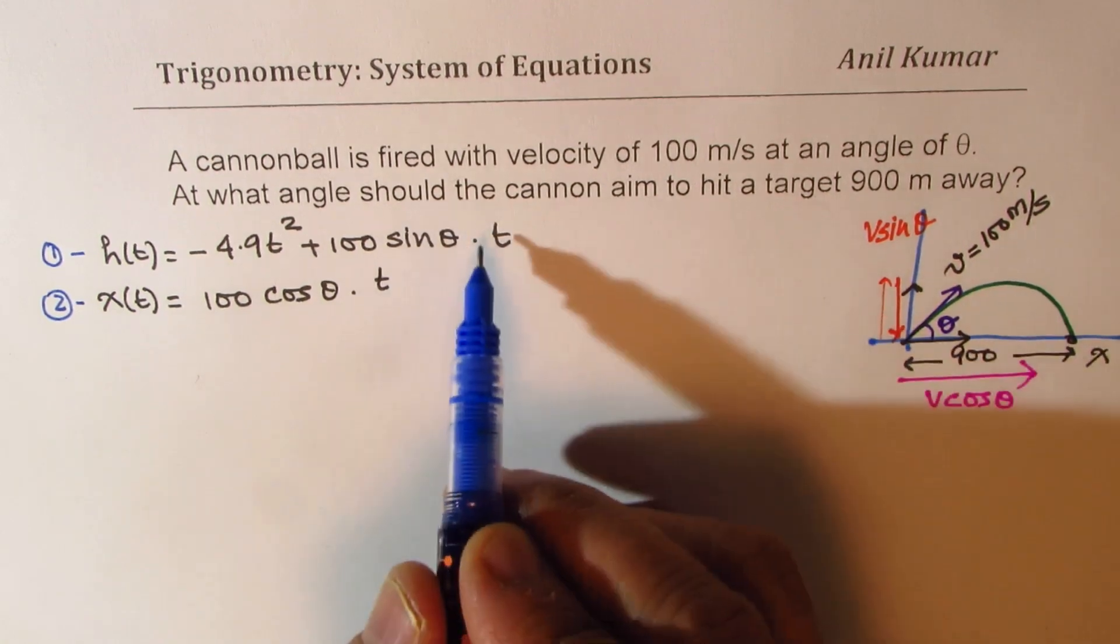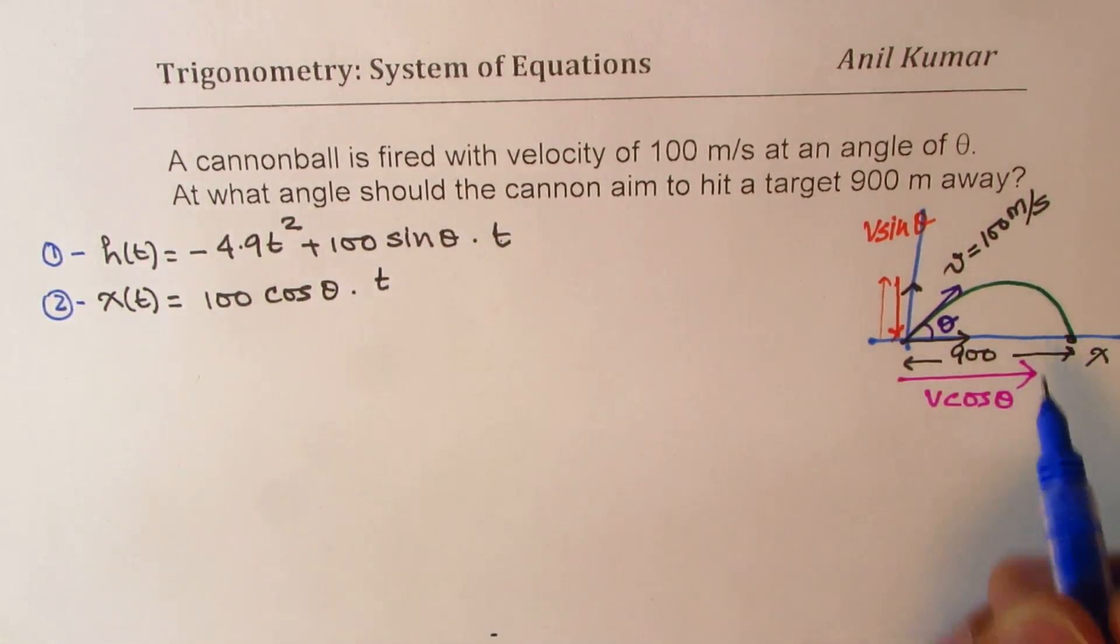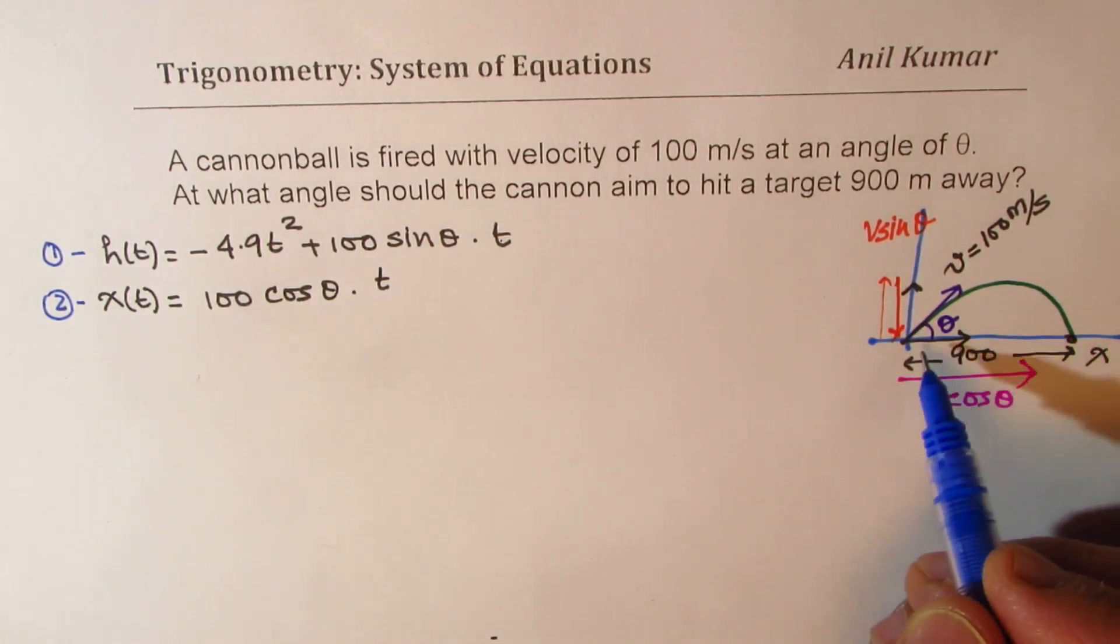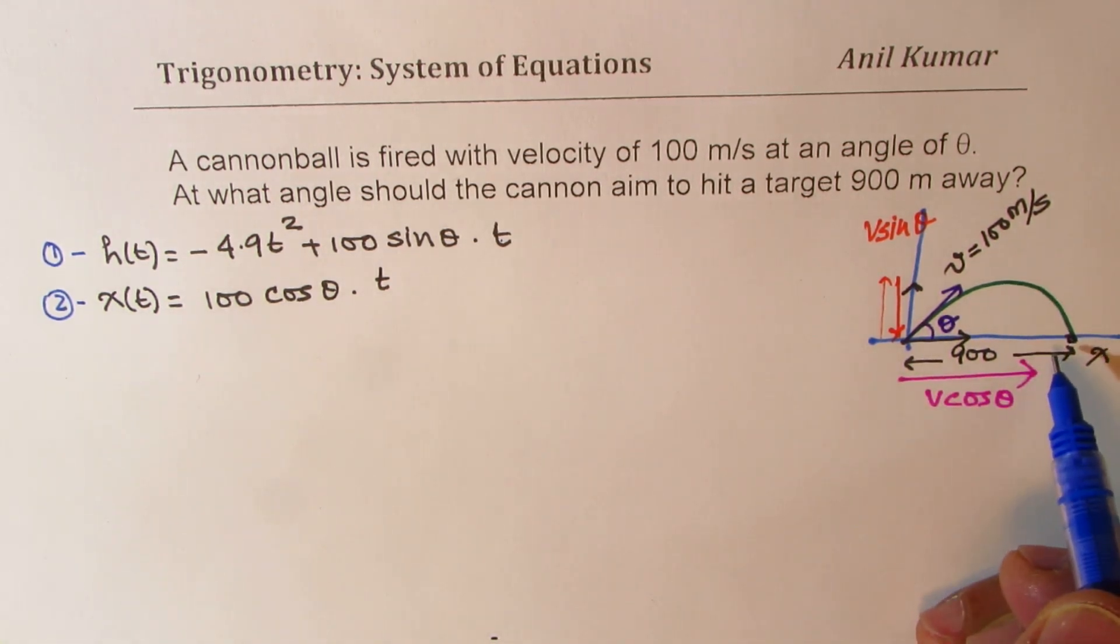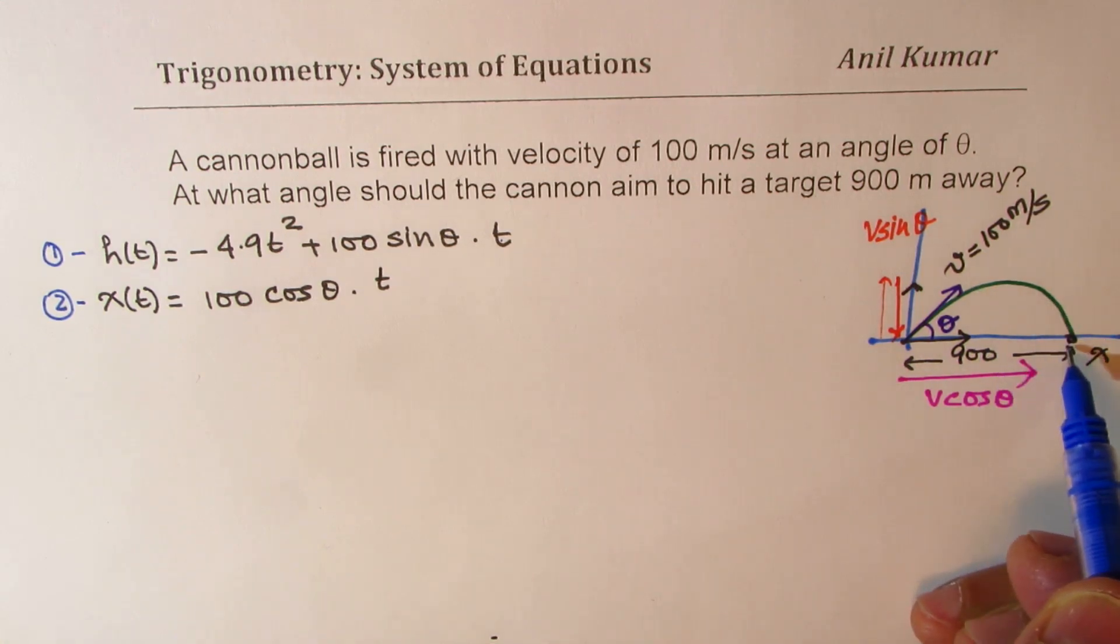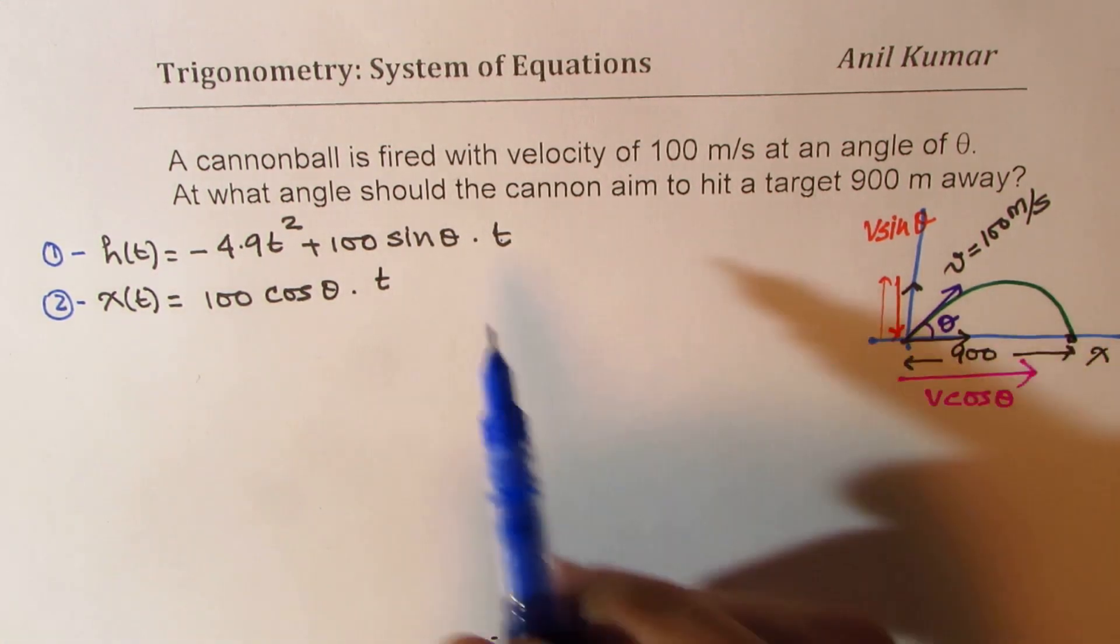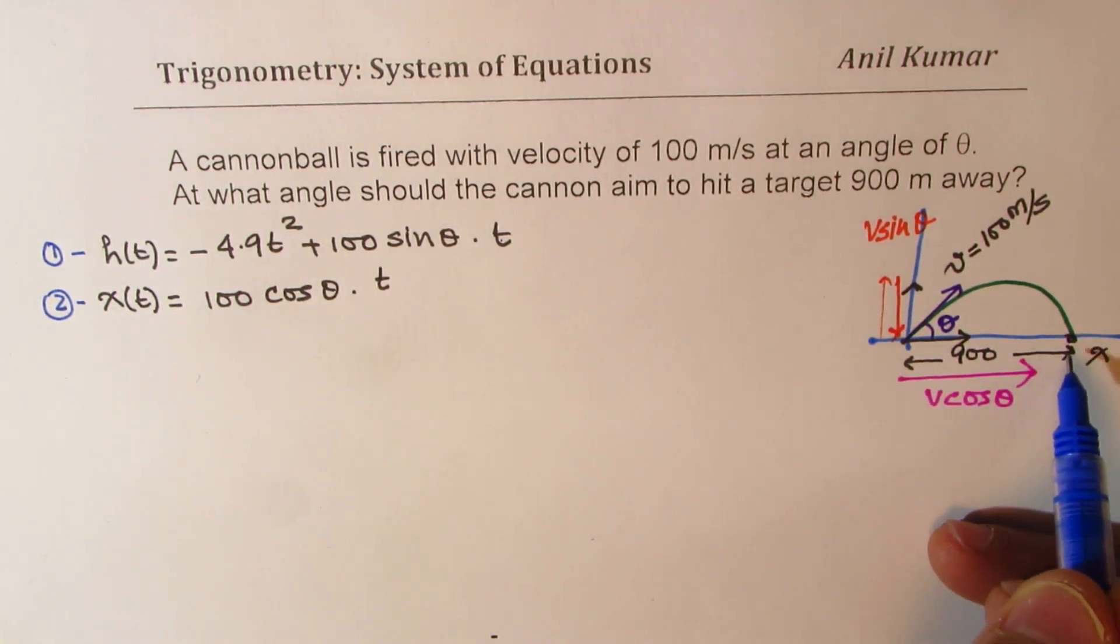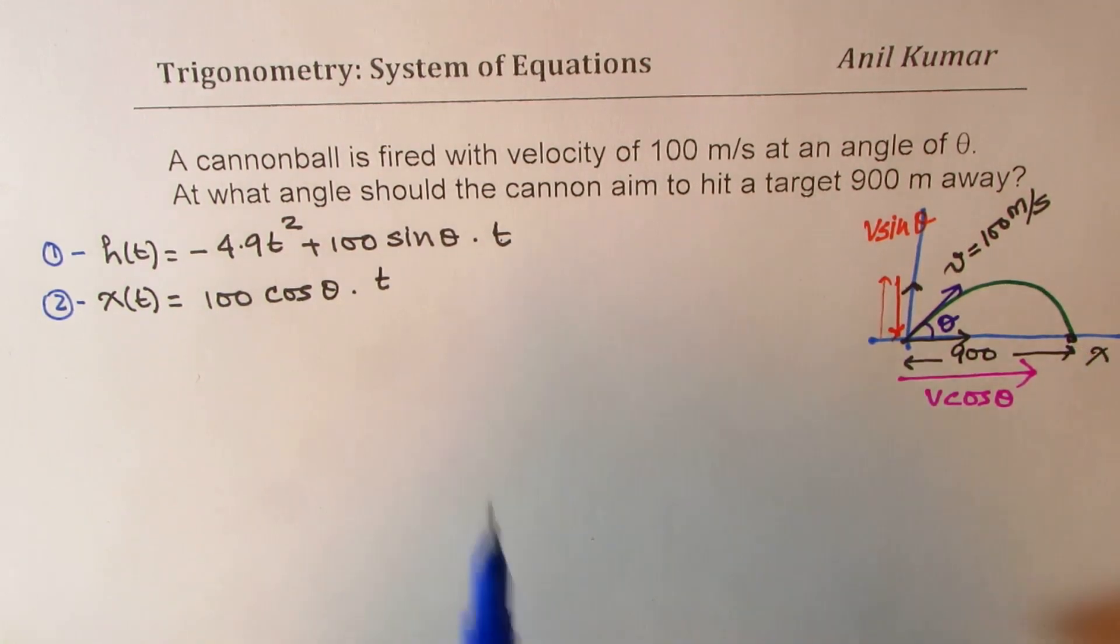Now, let us consider the first equation. What are we looking at? We want this cannonball to hit the target. That means it should go up and down in this time. So height at time t, when it hits the target, should be 0, right?